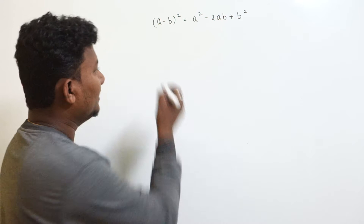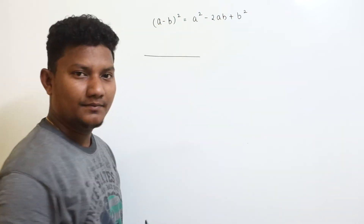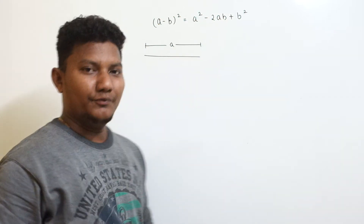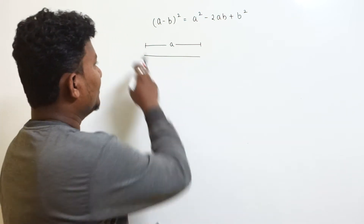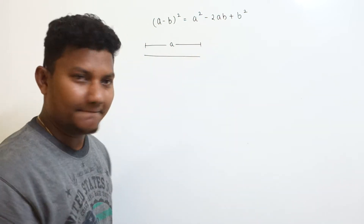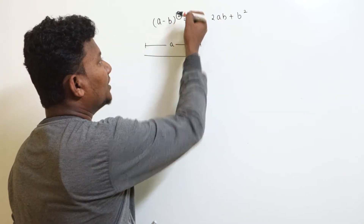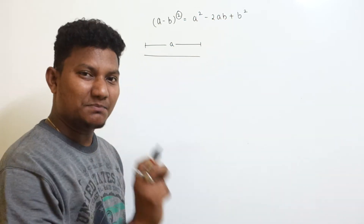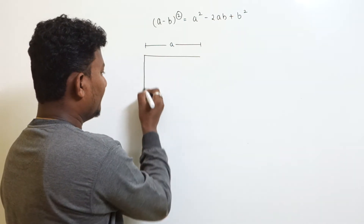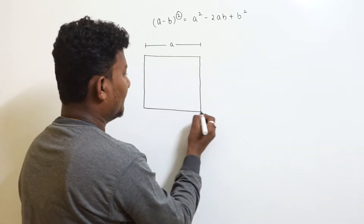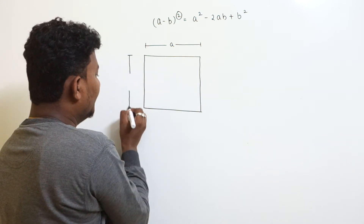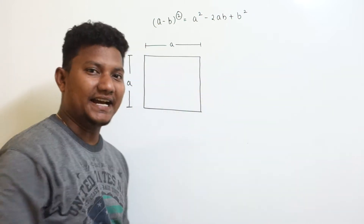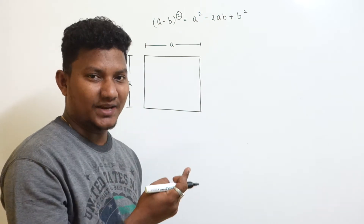Let's take a length as 'a', where a and b are constants. So let's mark a length from here to here as 'a'. Since we want (a minus b) whole square, we will draw a square with side 'a'. The distance from here to here is 'a' only, so the area of this square is side squared, and since the side is 'a', we can say this is a squared.